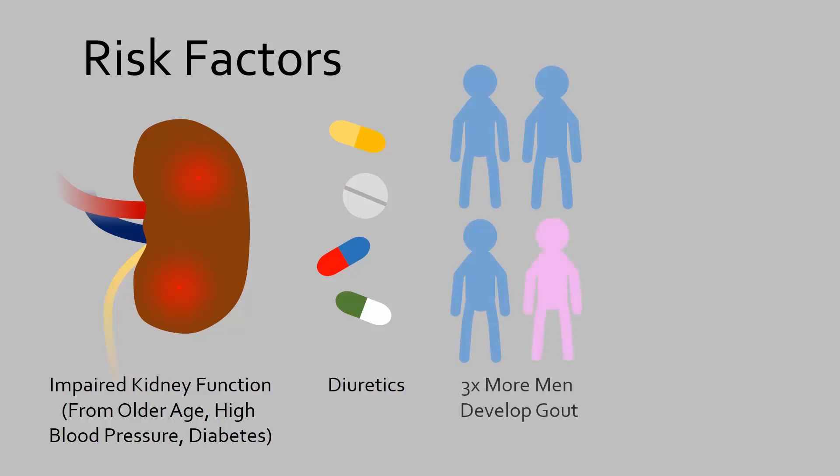Gout affects men three times more than women, possibly because estrogen is a natural uricosuric. Of the women that are affected, the majority is postmenopausal women who have decreased estrogen levels. Gout is also found to run in families, likely due to genetic mutations in uric acid transporters in the kidney.